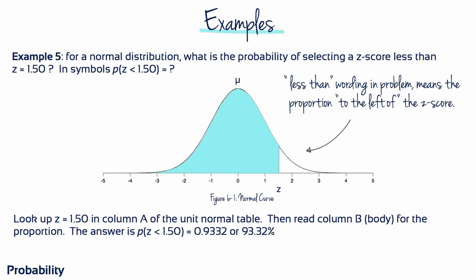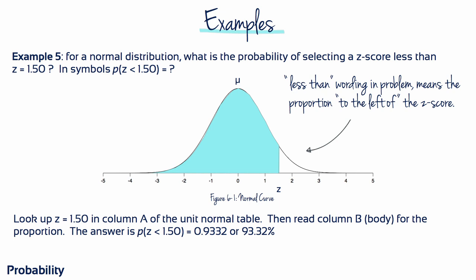Example 5: For a normal distribution, what's the probability of selecting a z-score less than 1.5? Make a rough sketch, mark the mean and standard deviation, and mark z equals 1.5. The 'less than' wording means the proportion is to the left of the z-score — it's a body. Looking up z equals 1.5 in column A and reading from column B, the answer is 0.9332 or 93.32%.